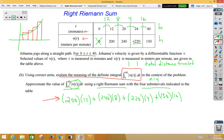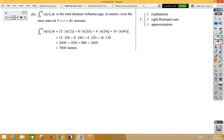So let's see how AP would assign values to this. Three points. First point, explanation. Notice, total distance Joanna jogs in meters over the time interval. One point. Second point is to set up your Riemann sum, right there. Third point would be the approximation, 7,600 meters.